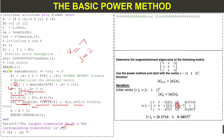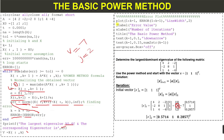For the error plot we use these commands: error is initialized as an empty bracket with semicolon, then error is updated as the bracket of the previous error concatenated with the new error value, producing a column vector for the error. Then to plot this error, we use the plot command: plot from 1 to k-1 (number of iterations) against the error, with line width of 2.